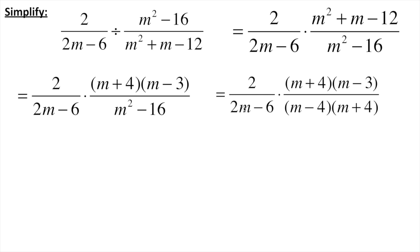Also right here I can factor these. It looks like I've got a 2 that I can pull out here. If I pull out a 2 it's going to leave me with an m minus 3 in parentheses here.